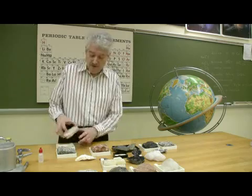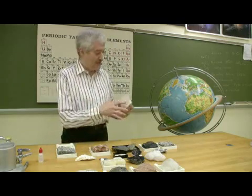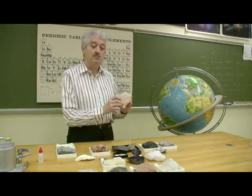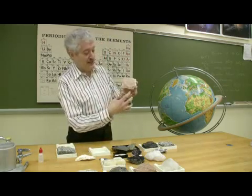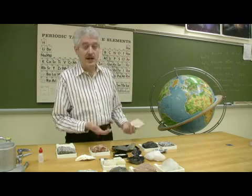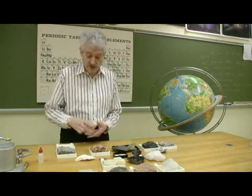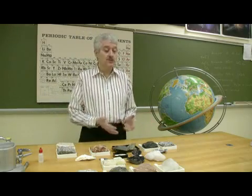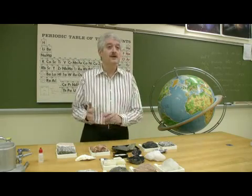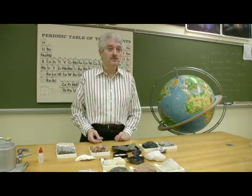Not all metamorphic rocks have foliation. For example, here's marble — marble is metamorphosed limestone. Looking at marble, we don't really see any stripes or bands, so we say that's a non-foliated texture. Those are examples of some of the common rock textures in the igneous, sedimentary, and metamorphic groups.